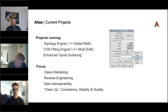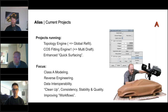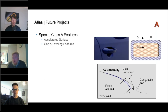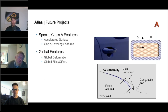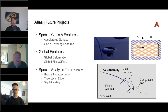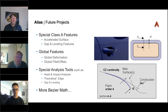We also have a number of projects on the go looking at aspects of our topology engine, curve and surface enhancements, and a focus on Class A modelling in reverse engineering. We also have on the back burner tools such as accelerated surfaces, global fillets, offsets, a gap and levelling tool, and a theoretical surface tool. In Alias we have the beauty of both NURBS and Bezier and can switch between the two very easily.